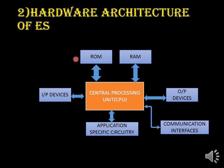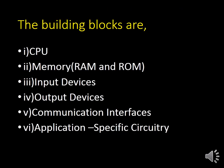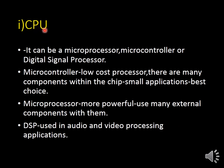The next one is hardware architecture of embedded systems. It consists of a central processing unit, input devices, output devices, ROM, RAM, application-specific circuitry, and a communication interface. The CPU can be a microprocessor, microcontroller, or digital signal processor. If it is a microcontroller, it is a low-cost processor with many components within a single chip — best for small applications. For larger applications, we use a microprocessor-based system because we can add many external components. A digital signal processor is used in audio and video processing applications.